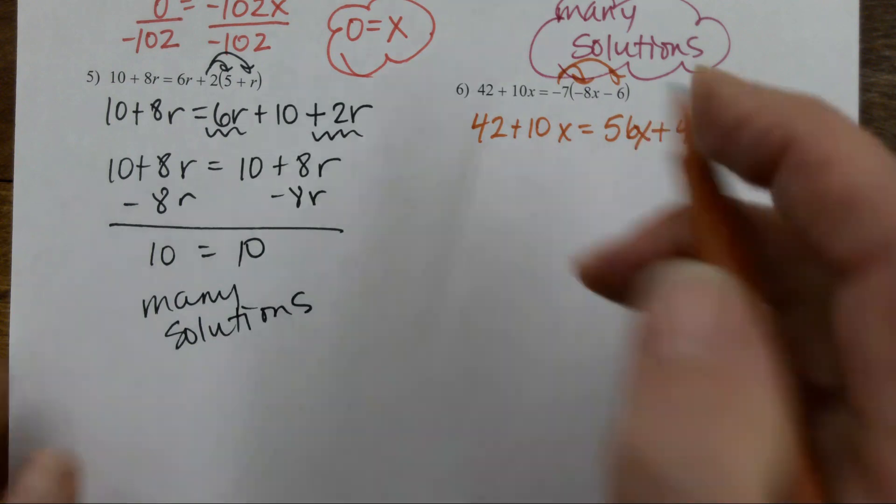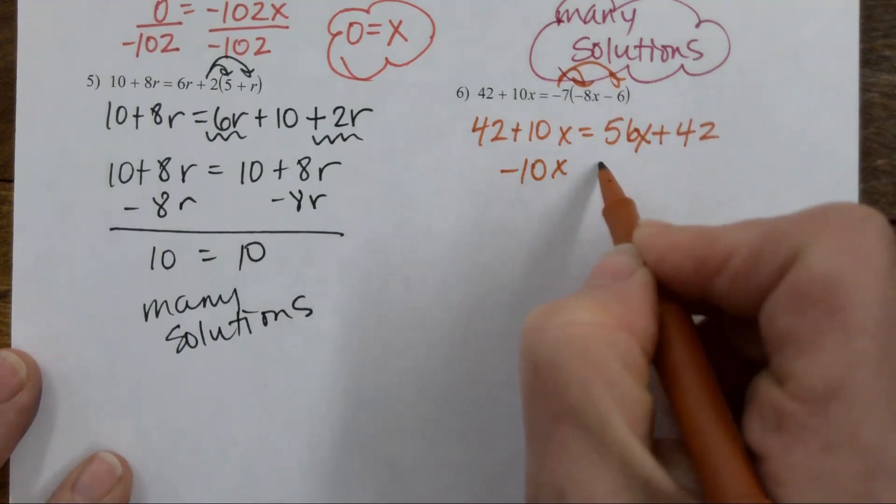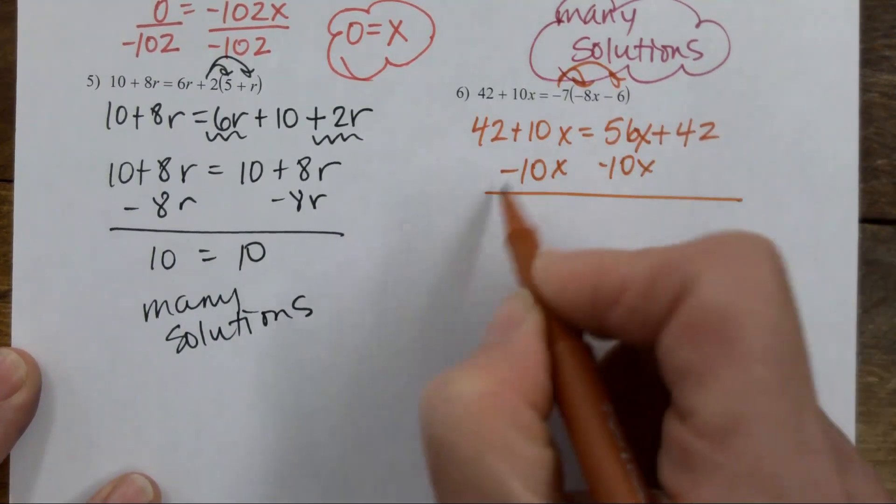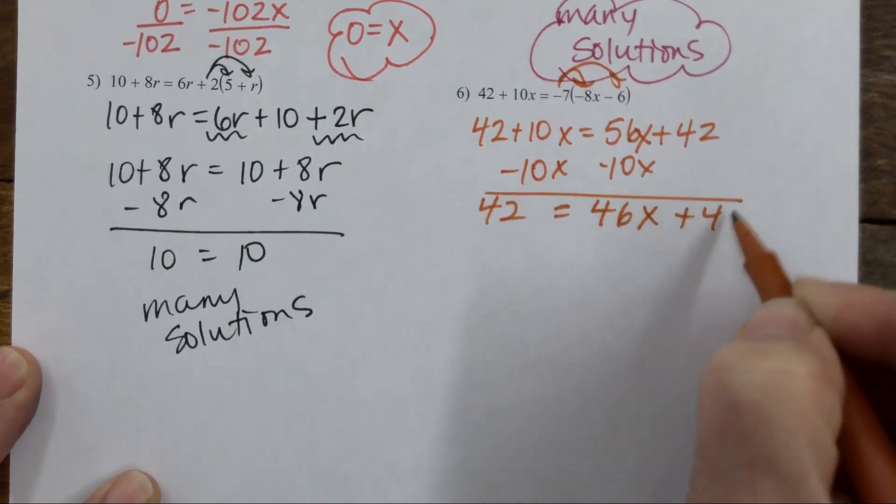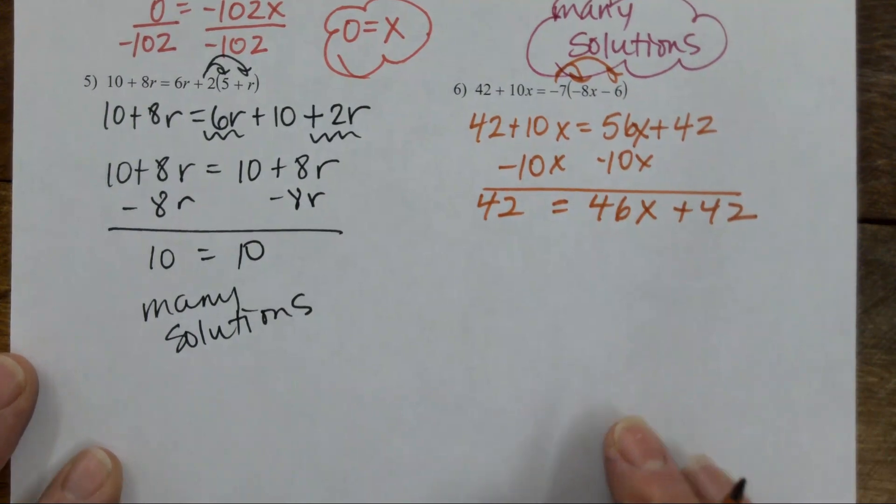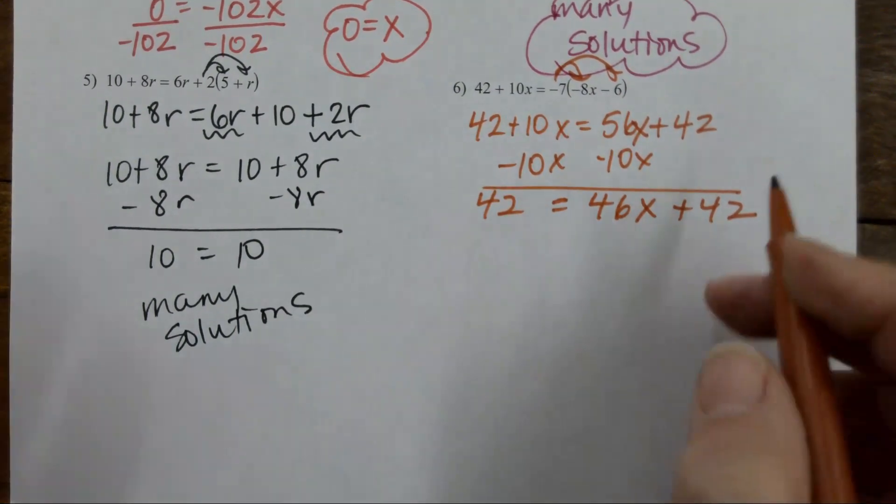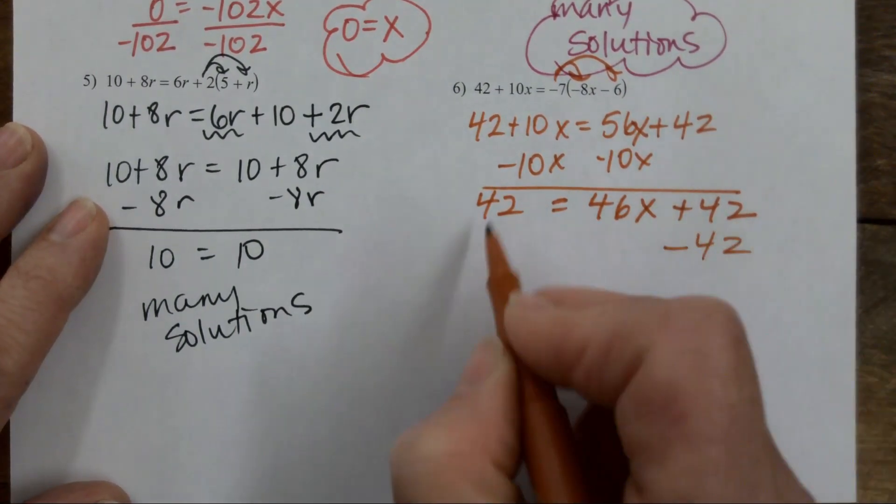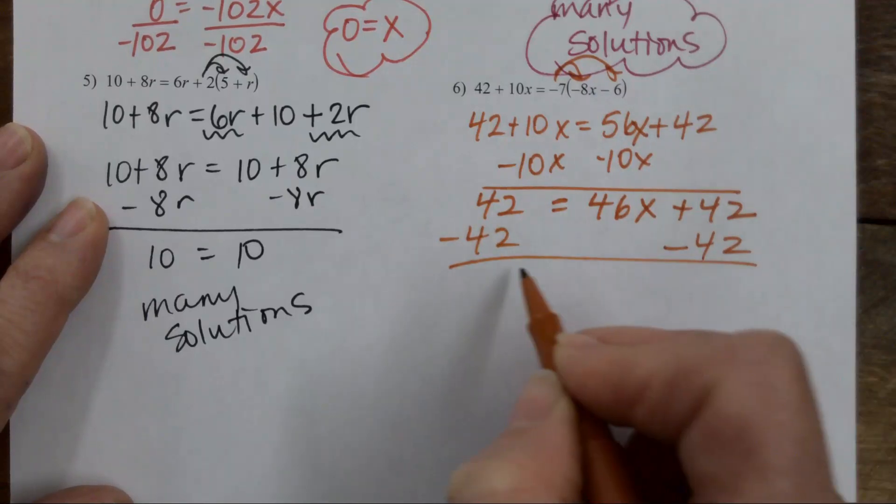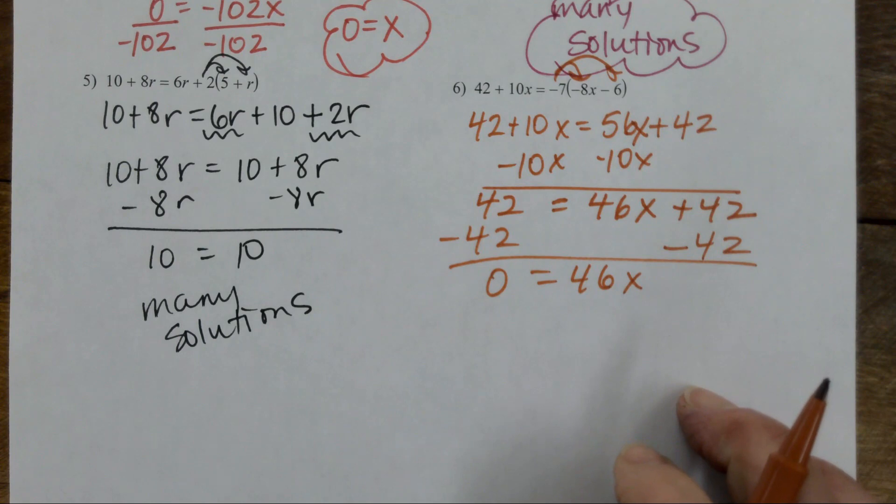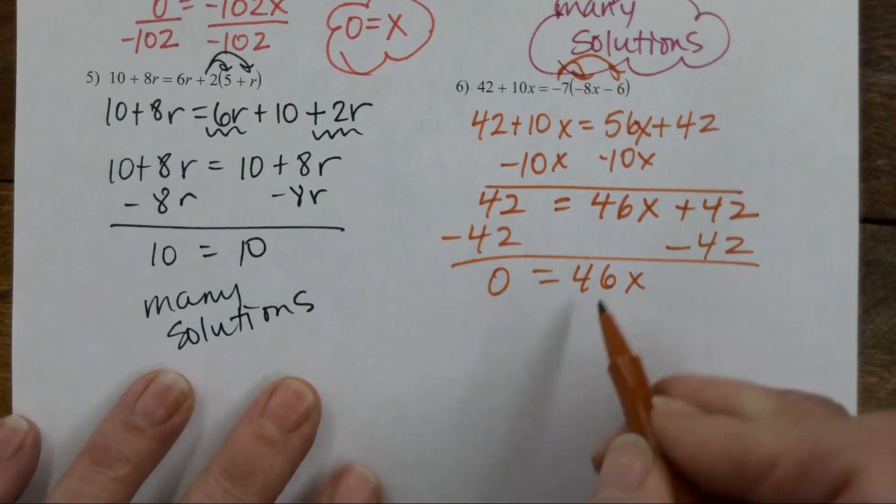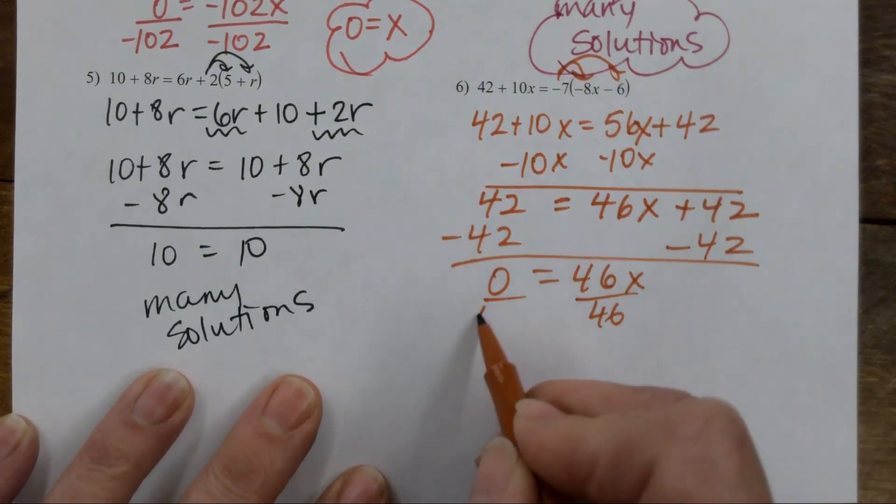What's my next move? Subtract 42. Subtract 42. 0 equals 46x. Divide by 46.